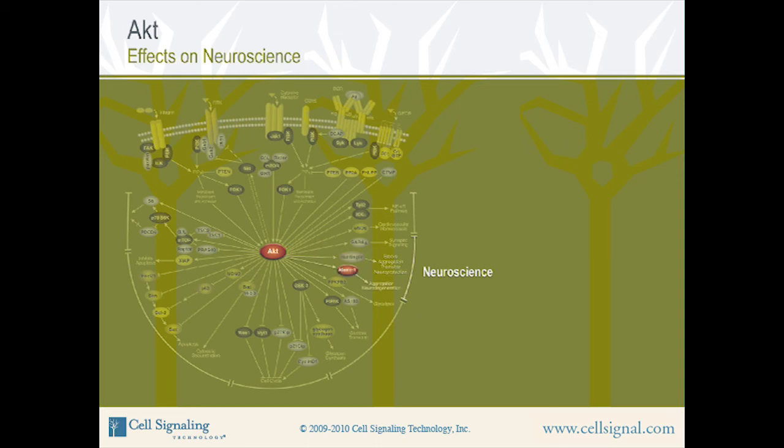Another target is Ataxin-1. Spinocerebellar Ataxia-1 is an autosomal-dominant neurodegenerative disorder. AKT phosphorylates Ataxin-1 at serine-776, which regulates its association with 14-3-3 proteins. This interaction increases Ataxin-1 stabilization and accumulation, resulting in enhanced neurodegeneration.